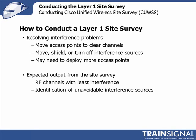Once you've done your site survey, found sources of interference, and decided what you can or cannot do about them, what should you be looking for from the Layer 1 site survey? It's really to identify the channels which have the least interference on them, which you'll use to plan out your wireless network. You also want to walk away with a list of interference sources you can't do anything about — those you'll have to coexist with when planning out your Wi-Fi networks.